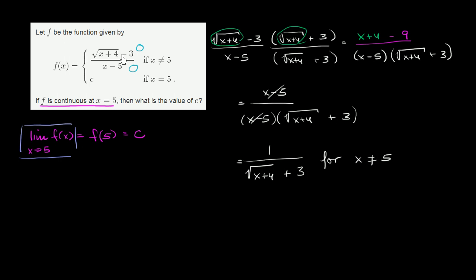Which is fine because in the first part of this function definition, this is for the case where x does not equal 5. So we could actually replace this, and this is a simpler expression, with 1 over square root of x plus 4 plus 3.